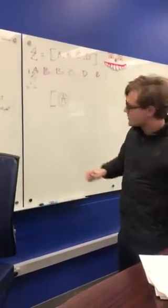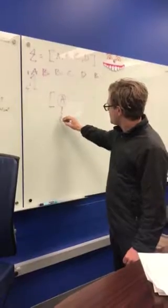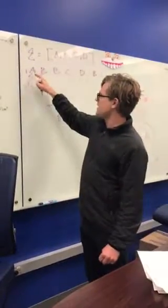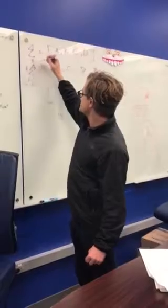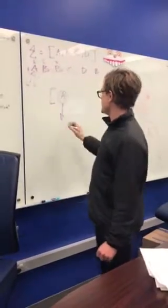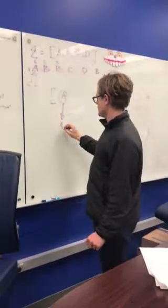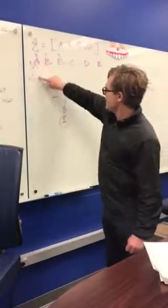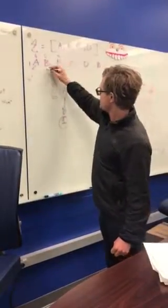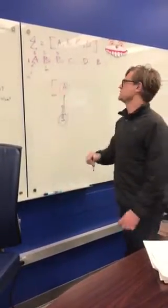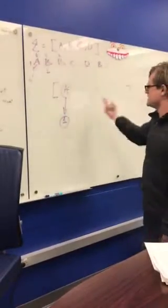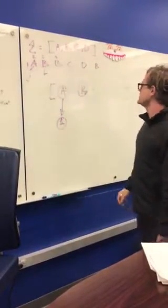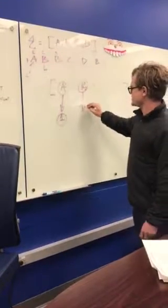And then we have a pointer to A's index into the text. So A is at index 1, so it gets this node. After that, the look-ahead buffer moves ahead 1, and B is not in there either, so B gets added with index 2.